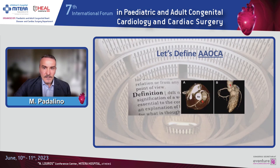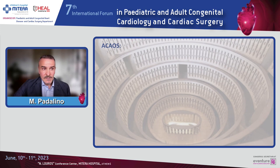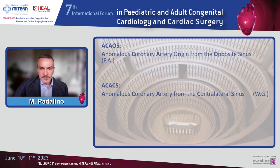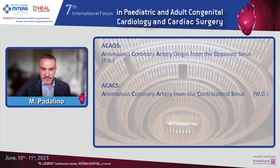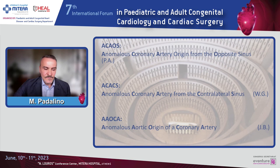What is the anomalous aortic origin of coronary arteries? Let's try to clarify what we're talking about. There have been different kinds of acronyms. One of the first was the anomalous coronary artery origin from the opposite sinus, by Paolo Gialini from Houston. Afterwards, from Philadelphia: anomalous coronary artery from the contralateral sinus. These two first definitions refer to the most common kind of anomalies, but they did not include all the peculiarities. So most recently, from Julie Brothers from Philadelphia, the acronym used more commonly is the anomalous aortic origin of coronary artery.